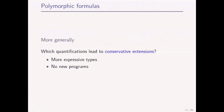More generally, you want to know what kinds of quantification will lead to conservative extensions. A conservative extension, in my sense, is something where you have more expressive types but you don't have new programs — you can't write programs that behave in a fundamentally different way. This is often desirable because you want types to be more expressive, but you don't want to be able to write programs that do wrong things or don't terminate.